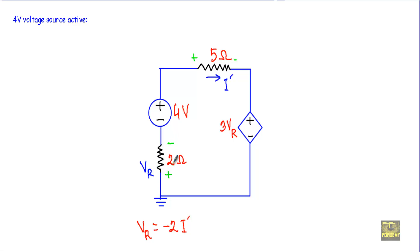To calculate the voltage drop across the 2 ohm resistor, considering this 2 ohm resistor, I will get Vr equal to minus 2 I prime. The 2 is the resistance and I prime is the current flowing through the 2 ohm resistor. This minus sign indicates that I am considering this terminal positive for Vr and this terminal negative. Since current enters from this direction and leaves from this direction, Vr will be minus 2I prime, where the minus sign is due to the polarity of the resistor.